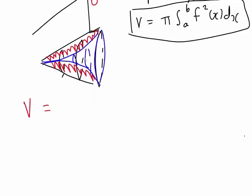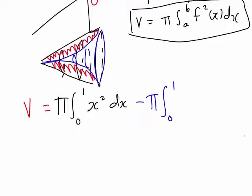Let's look at the volume of the outside cone in black first, using our formula: pi times the integral from 0 to 1. Since f of x equals x, f squared of x equals x squared, so we want pi times the integral from 0 to 1 of x squared dx. From that we subtract the volume when y equals x to the 4 is revolved around the x-axis, which gives pi times the integral from 0 to 1 of x to the 4 squared dx. This will give us the volume of the required region revolved around the x-axis.